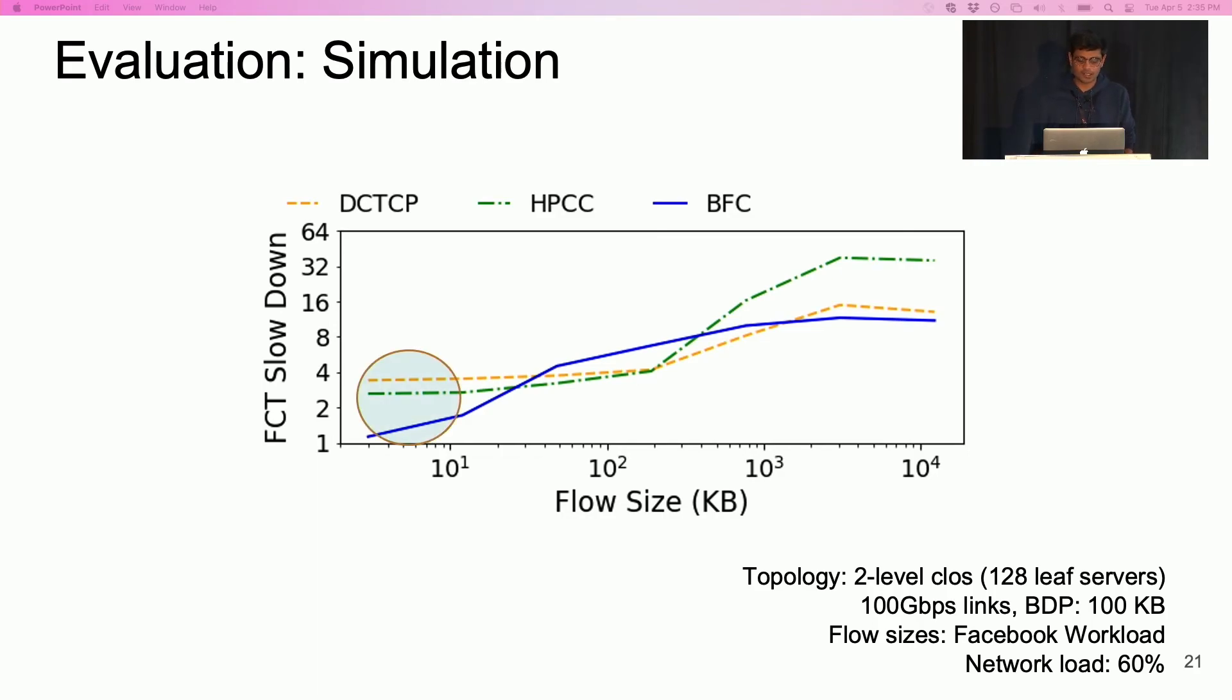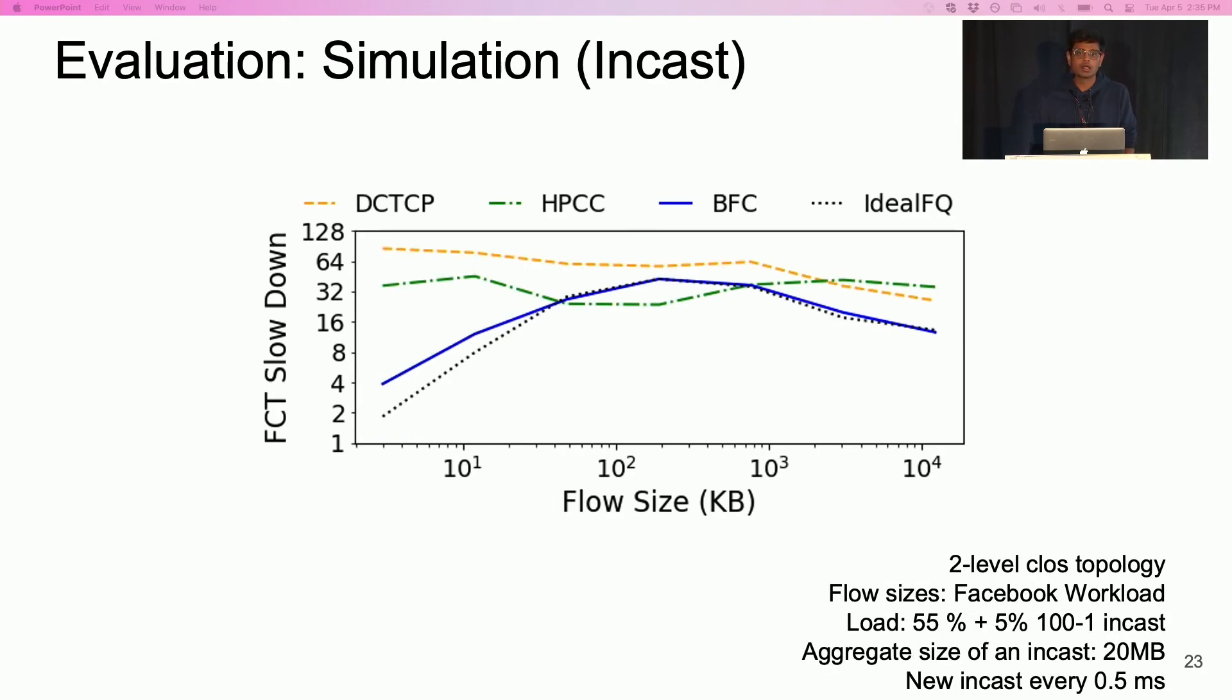BFC outperforms both HPCC and DCTCP. BFC achieves lower latency for short flows and higher throughput for long flows. To understand how close BFC gets to the optimal performance, we also compare against an idealized scheme. In ideal FQ, switches perform ideal fair queuing among flows, and switches have unbounded buffers. In this experiment, BFC incurs no head of line blocking and achieves close to ideal performance.